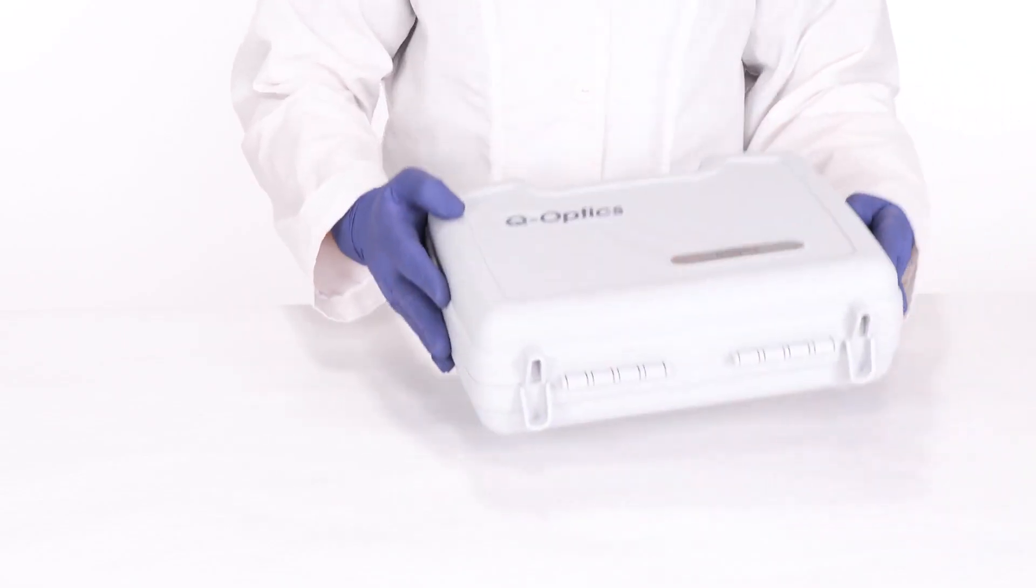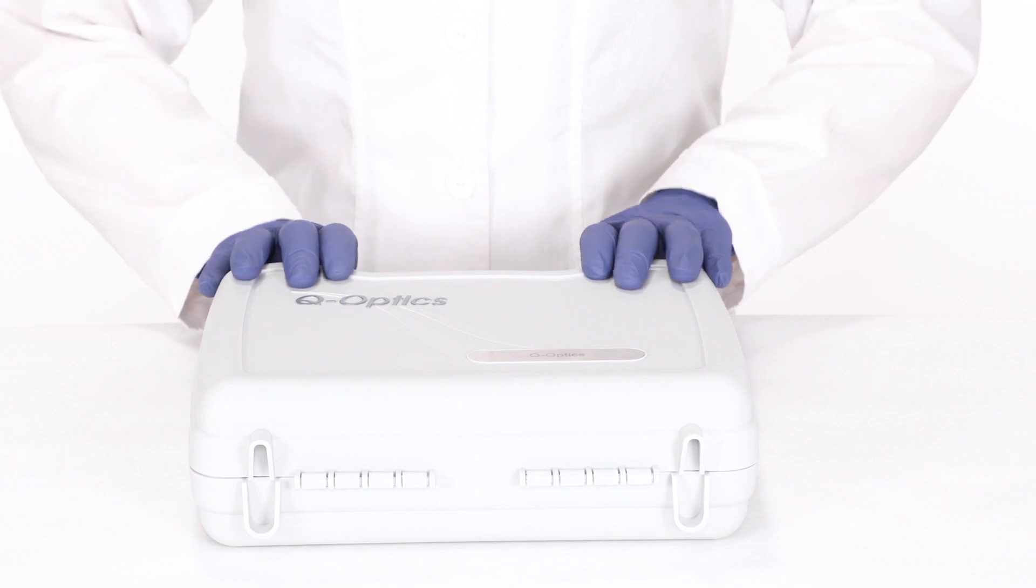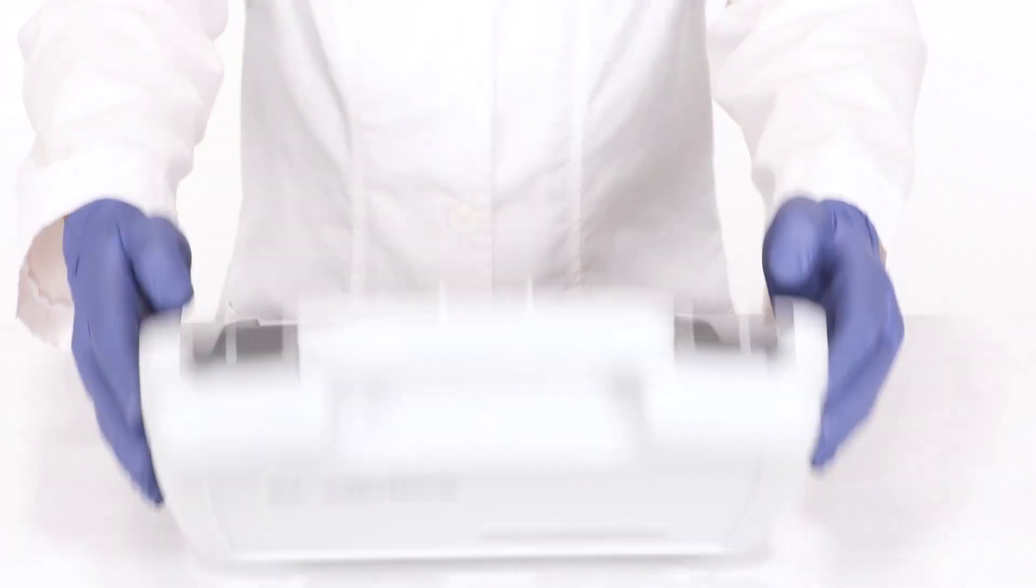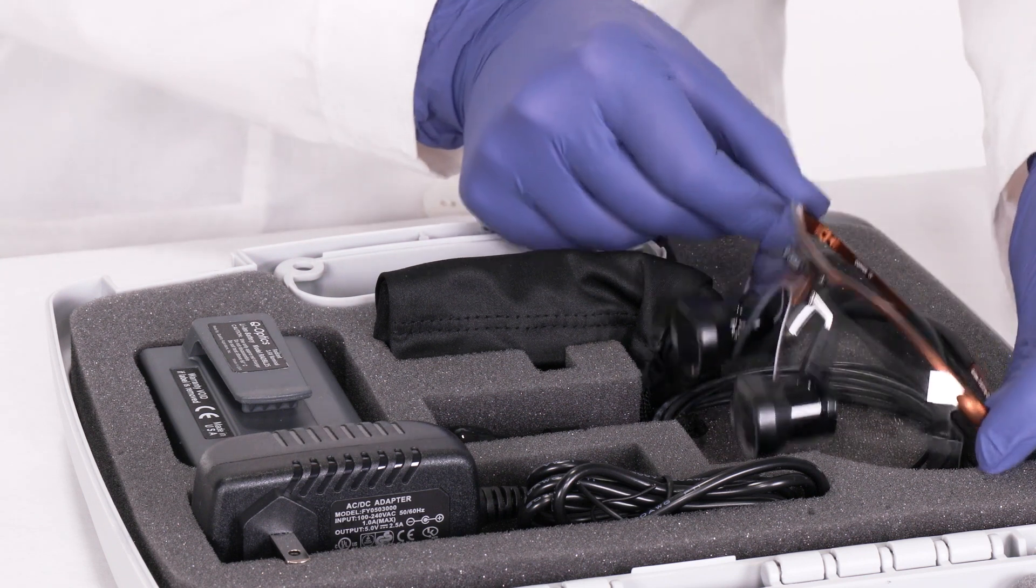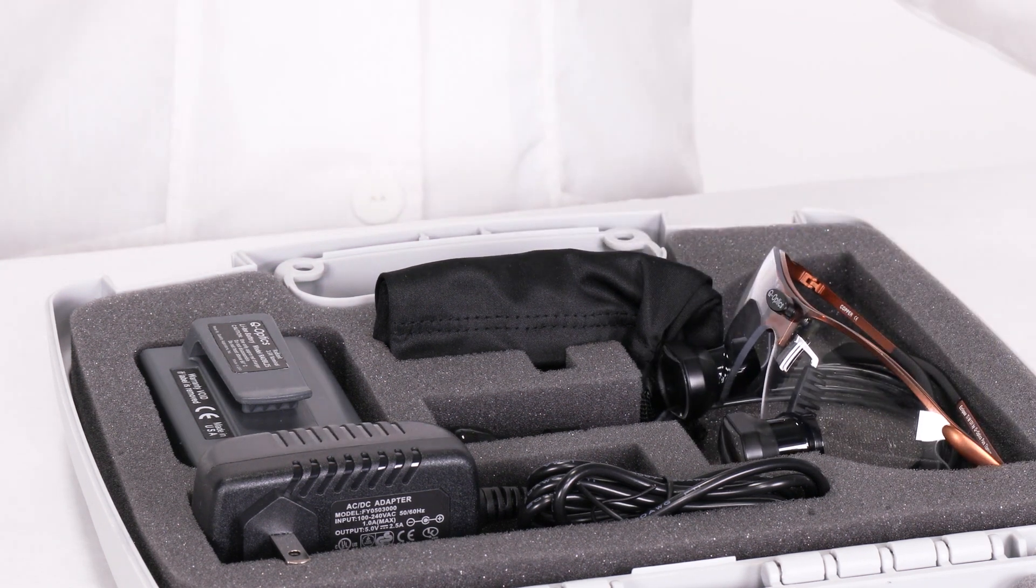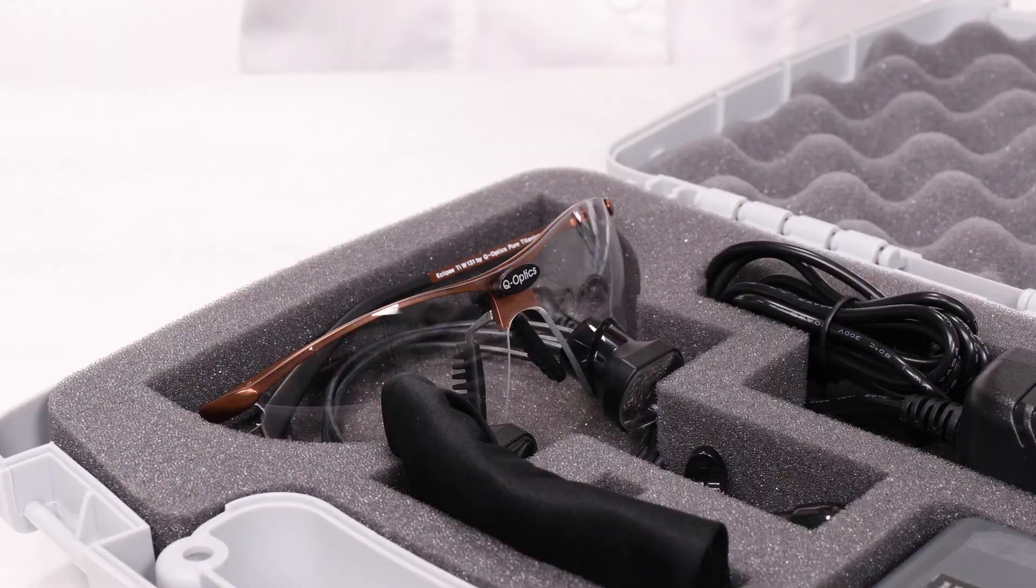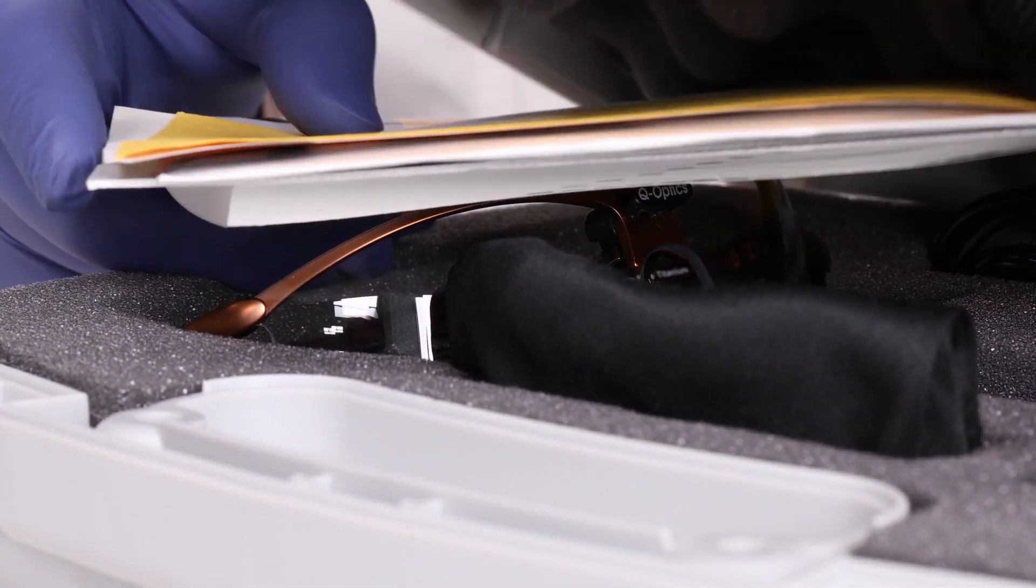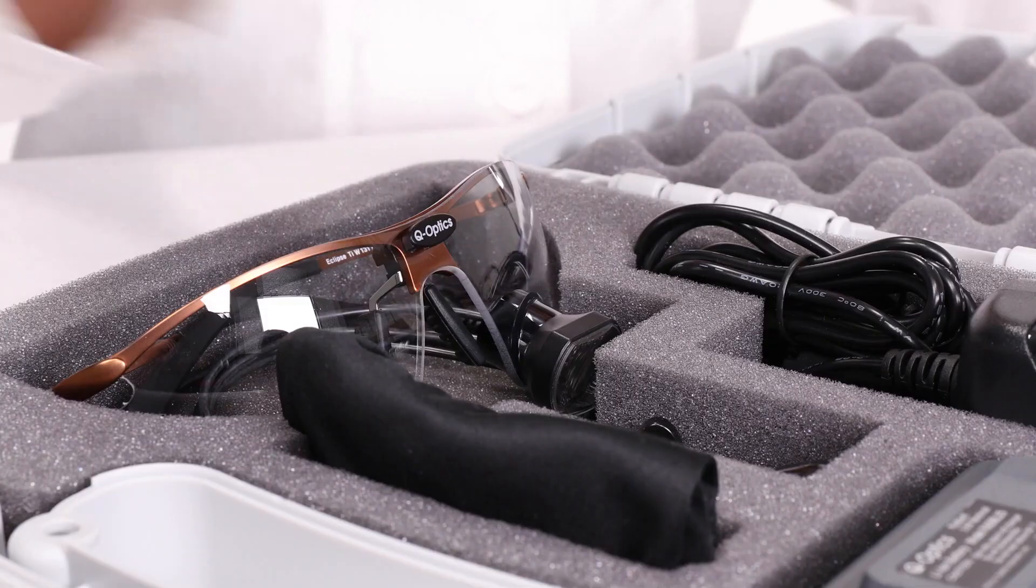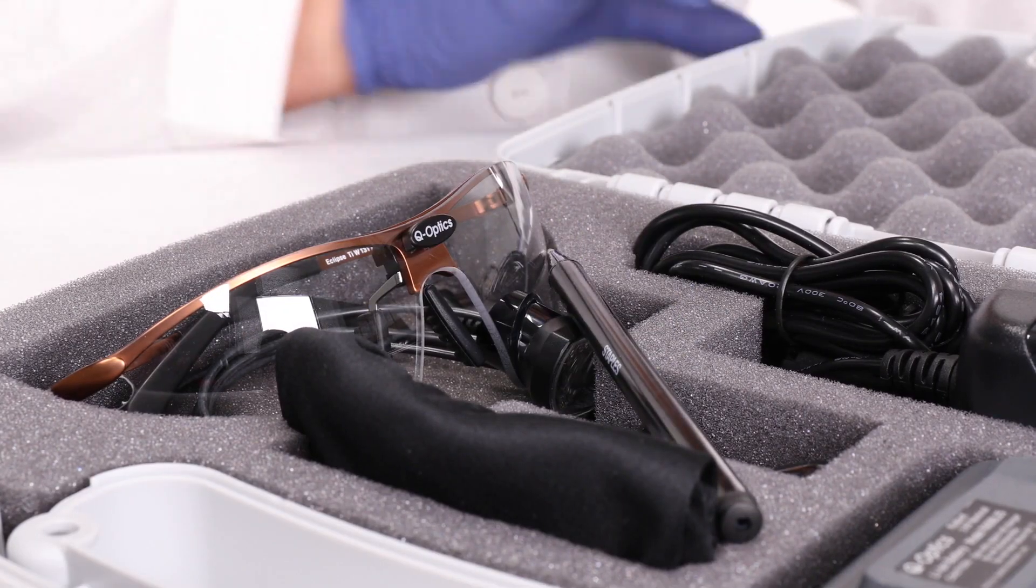To preserve the longevity of your loops, it is best to store them properly while not in use. Place your loops back in their case to prevent accidents that might damage the lenses, telescopes, or frame. Please don't store other items in the case where they might affect your loops. Added pressure could stress the frame or scopes, and loose items could potentially score the glass.